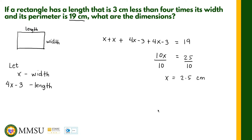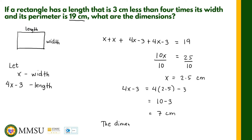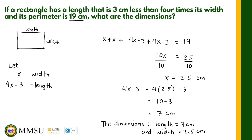Now that is the width of the rectangle. To solve for the length, we compute 4x minus 3: that is 4 times 2.5 minus 3. Four times 2.5 is 10, and 10 minus 3 is 7 centimeters. So to answer the problem, the dimensions are: length equals 7 centimeters and width equals 2.5 centimeters. That answers the problem for this example.